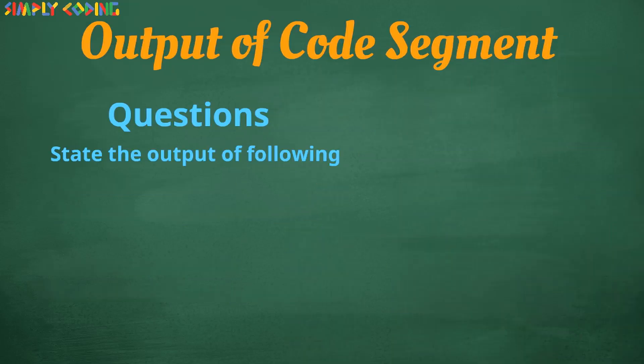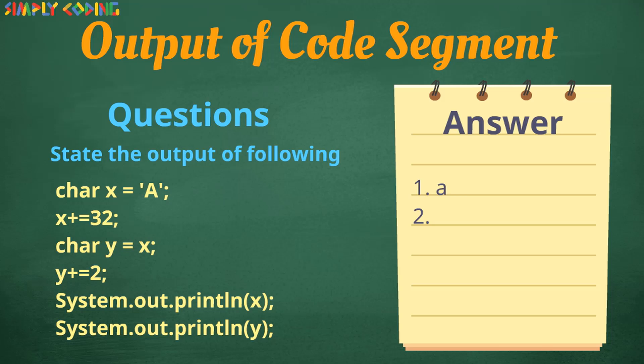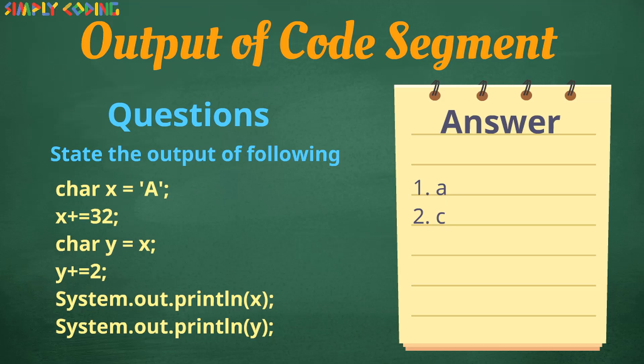The question could also be arithmetic operations on ASCII codes. For this you need to make sure you remember the ASCII codes I shared earlier. If you see this example over here x plus is equal to 32 is just changing the case from capital A to small a. Then small a is assigned to y and is incremented by 2. So the alphabet is now small c and these two values are getting printed.